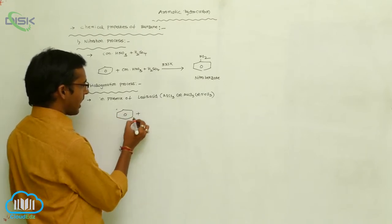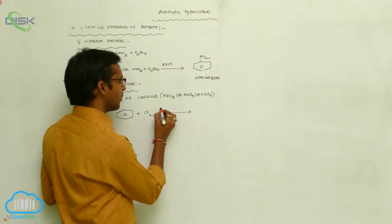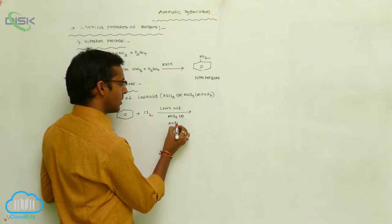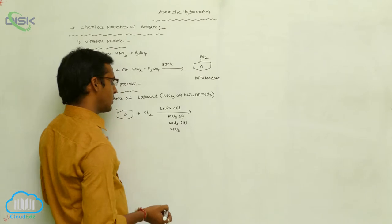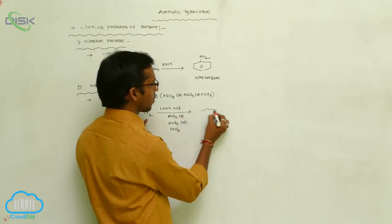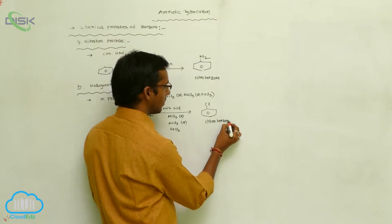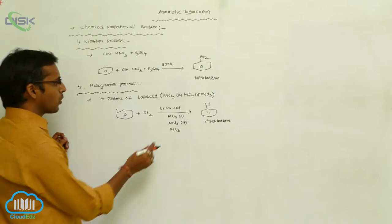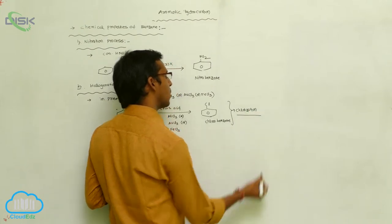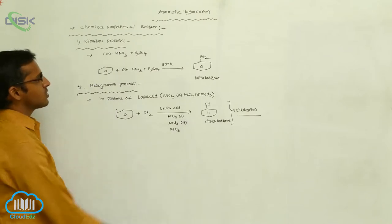See the reaction: benzene is reacted with chlorine (Cl2) in the presence of a Lewis acid like AlCl3 or FeCl3. The chlorine is introduced on benzene and gives chlorobenzene. This specific reaction is called the chlorination process, where the chlorine group is substituted on benzene in the presence of Lewis acid.